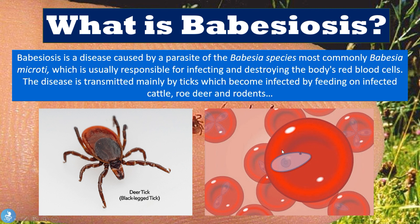Taking a closer look at this image, we can see what the parasite actually looks like and how it enters the red blood cell, infects it, and then destroys it. From this definition we also get that this disease is mainly transmitted to humans by ticks — usually deer ticks or black-legged ticks — which become infected by feeding on other infected animals such as cattle, roe deer, and rodents.